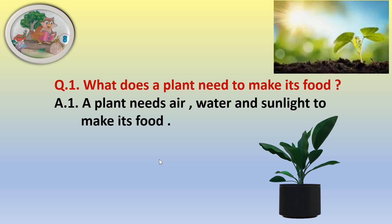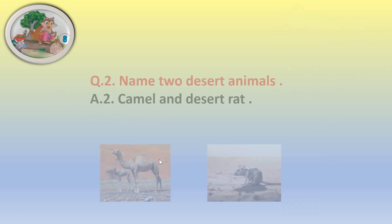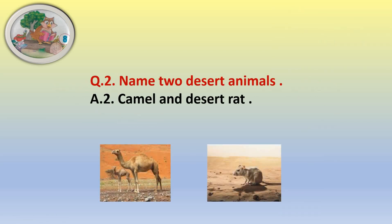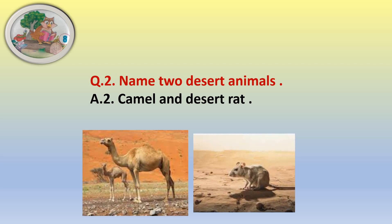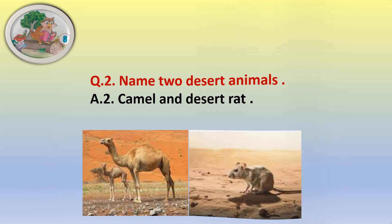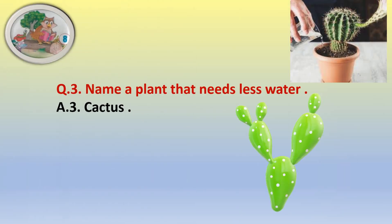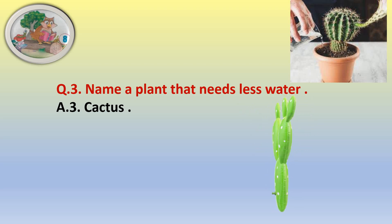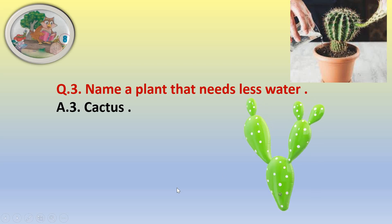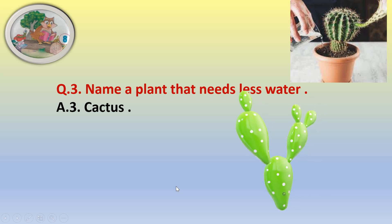Second question: name two desert animals. The answer is camel and desert rat. Third question: name a plant that needs less water. The answer is cactus. The cactus grows in deserts.